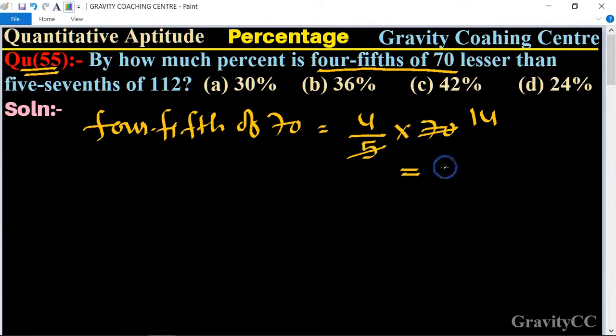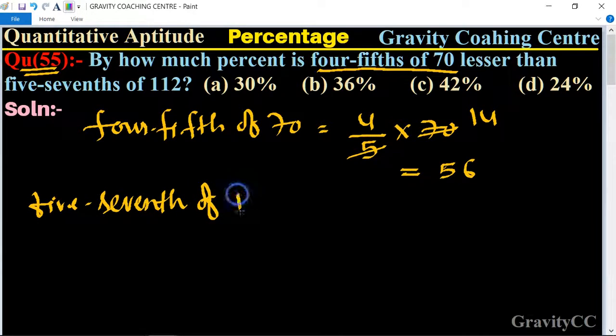And five-sevenths of 112. Five-sevenths of 112 is equal to 5/7 × 112, so it is cancelled by table of 16. 7 into 112, so 16 × 5 is 80.